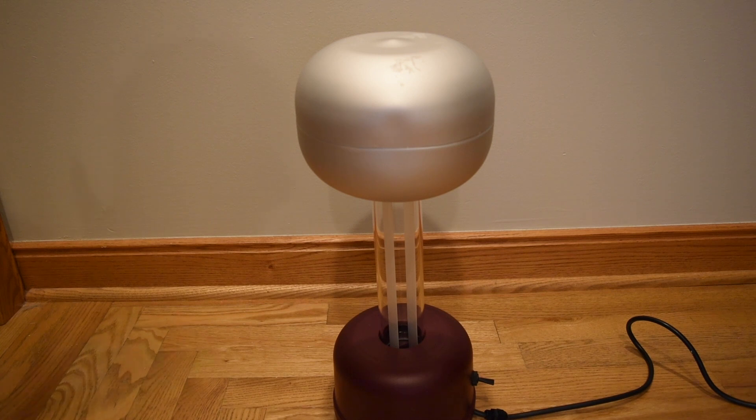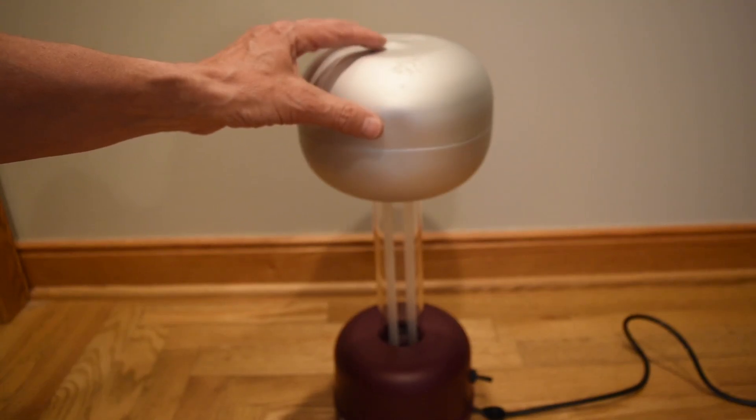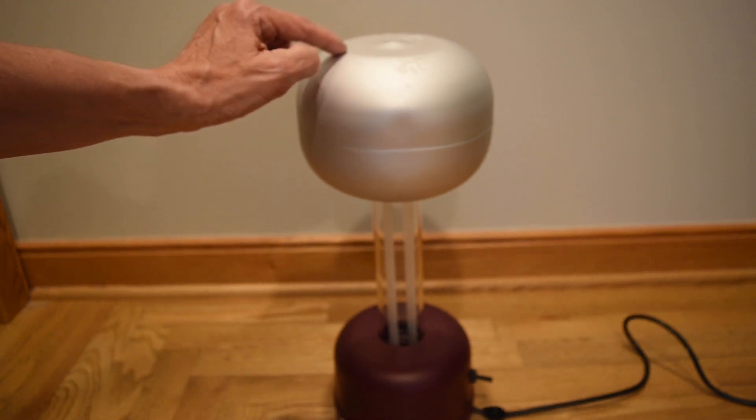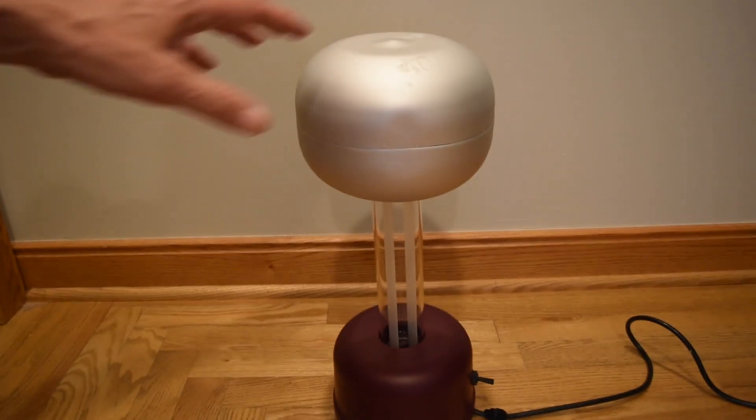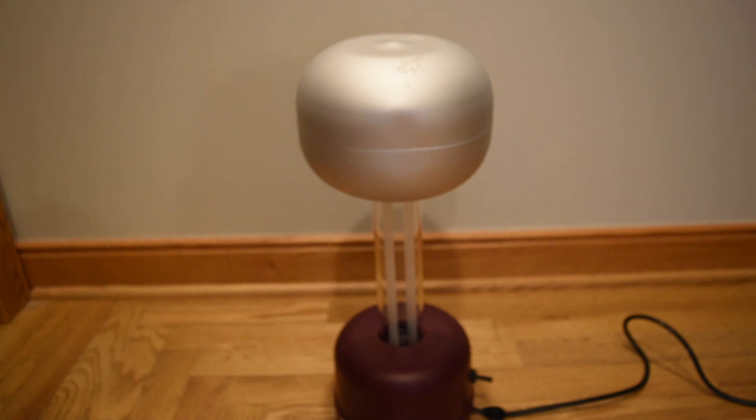A capacitor consists of two conductors. So the way to think of the Van de Graaff generator is this globe here is one conductor, and the other conductor is wherever the electric fields emanating from this globe terminate, which are going to be a long distance away. It will be whatever metal structure it eventually encounters.